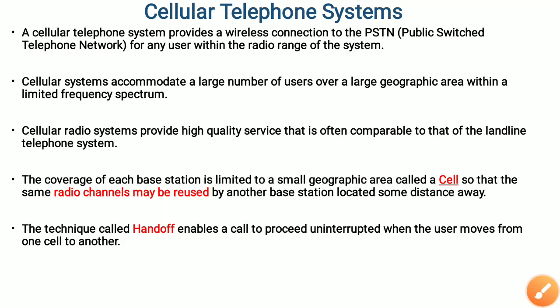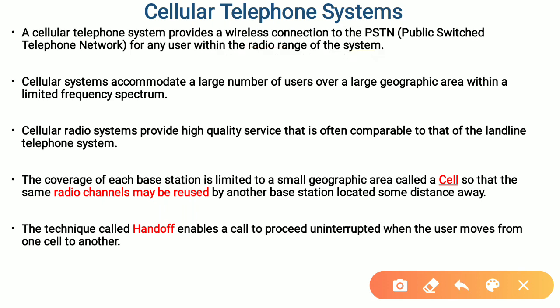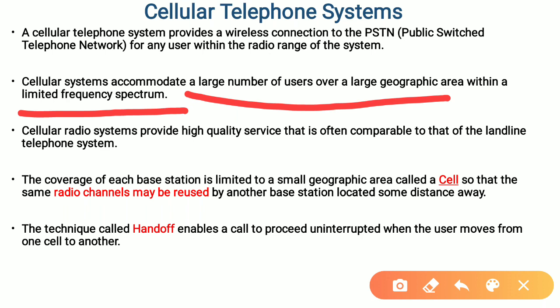In this video I would like to explain about cellular telephone systems. Cellular telephone system means the communication system that can provide wireless communication to the PSTN for any user within the radio range. That is the main peculiarity of cellular telephone system, and this can accommodate a large number of users within a geographical area or within a limited frequency spectrum.